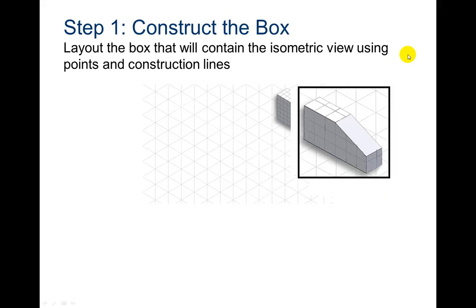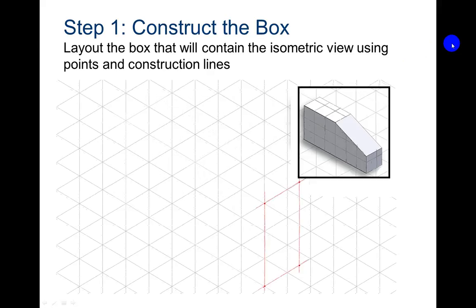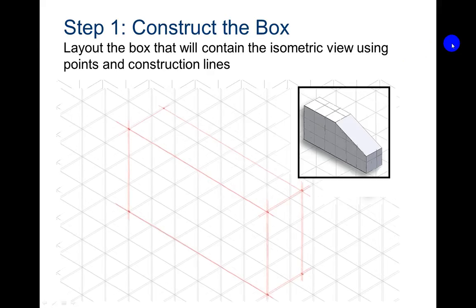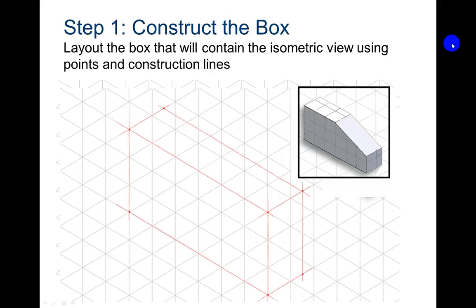We're going to construct the box. Notice this right here is isometric grid paper. And you can find this paper if you need to print it off. You can find it on blackboard under drawing sheets. So first they make their imaginary box.